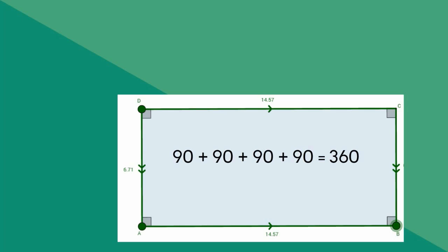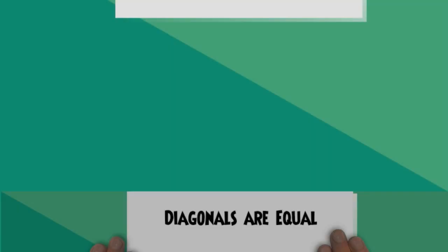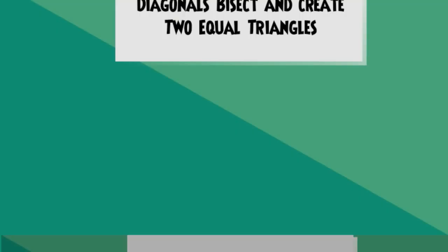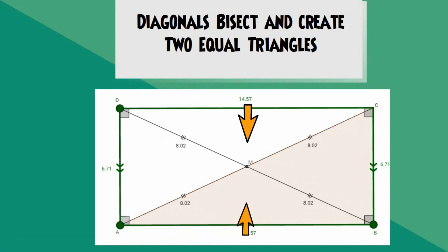Let's talk about the diagonals of a rectangle. The diagonals of a rectangle are of equal length. The diagonals also bisect and create two pairs of equal triangles. Opposite sides of a rectangle are equal and the opposite sides are parallel.